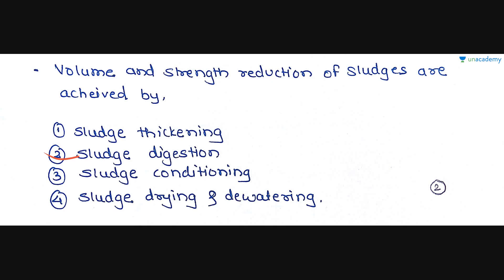Sludge digestion is generally anaerobic decomposition of sludge. Sludge conditioning involves increasing temperature or treating with chemicals so the sludge is brought to a stage ready for draining. Sludge drying and dewatering reduces volume by removing the moisture content of sludge.